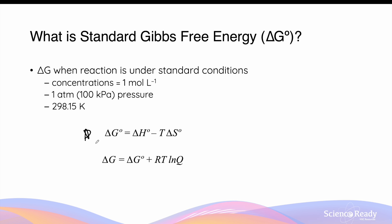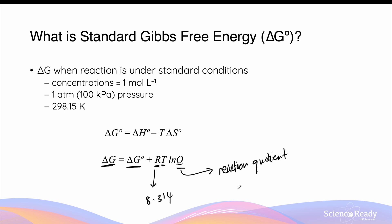That equation is only useful if you're provided with the values of enthalpy and entropy change under standard conditions. A more useful equation that links the change in Gibbs free energy to the standard change in Gibbs free energy is: ΔG = ΔG° + RT·ln(Q), where R is the gas constant (8.314 J/mol·K), T is the temperature in Kelvins, and Q is the reaction quotient.